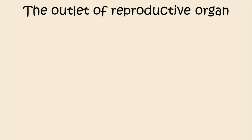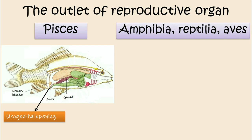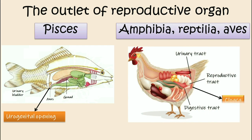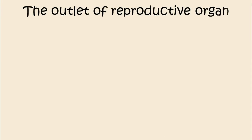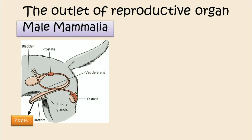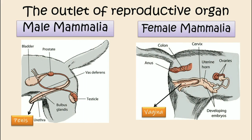Now I'm going to tell you about the outlet of the reproductive organ in animals. Pisces has a urogenital opening — through this opening, ovum and sperm are released from the body for fertilization. Amphibia, reptilia, and aves have a cloaca, which is the opening of the reproductive, digestive, and excretory system. Mammalia has a penis in the male to release sperm from the body, and a vagina in the female as the opening of the reproductive organ.